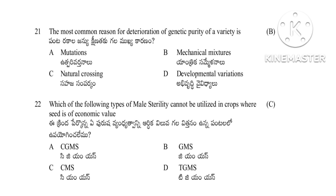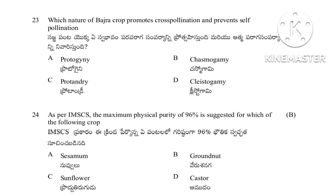Question 22: Which type of male sterility cannot be utilized in crops where seed is of economic value — CGMS, GMS, CMS, or TGMS system. The answer is CMS, cytoplasmic male sterility system. Question 23: Which nature of Basra crop promotes cross-pollination and prevents self-pollination — protogyny, chasmogamic, protandry, or cleistogamous. The answer is protogyny. Note: in maize, protandry occurs, so for that the answer is A. For Basra, the answer is protogyny.